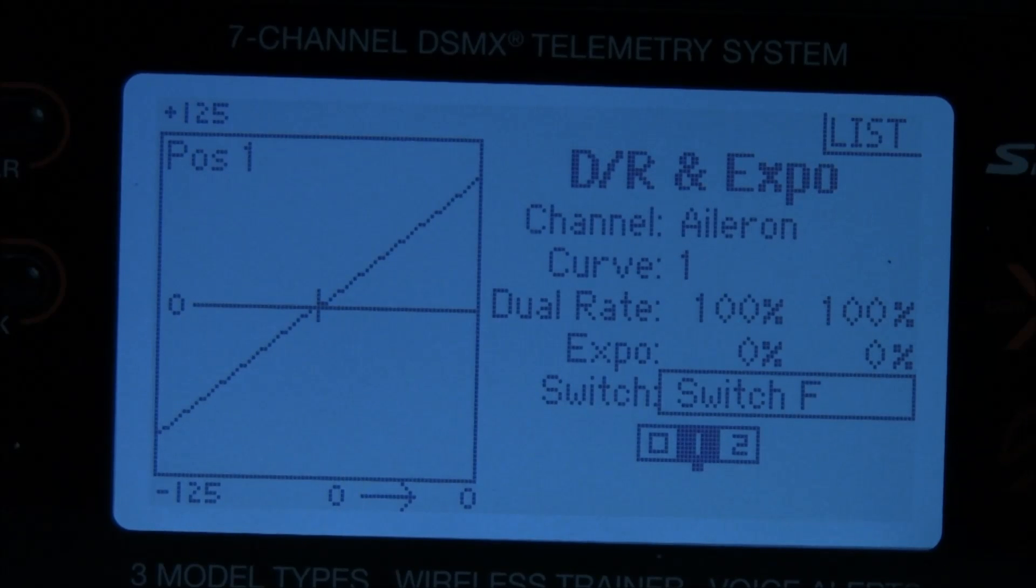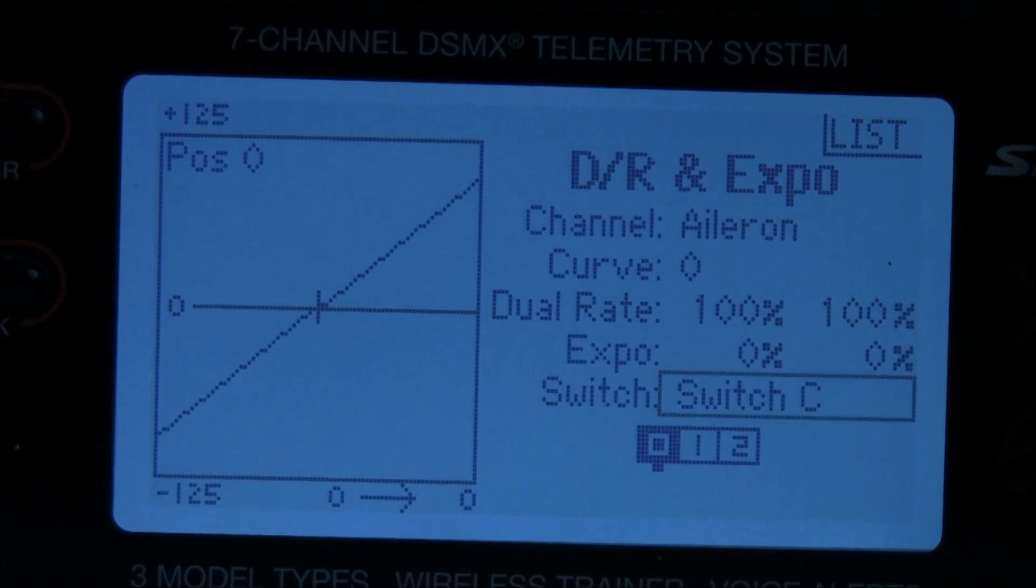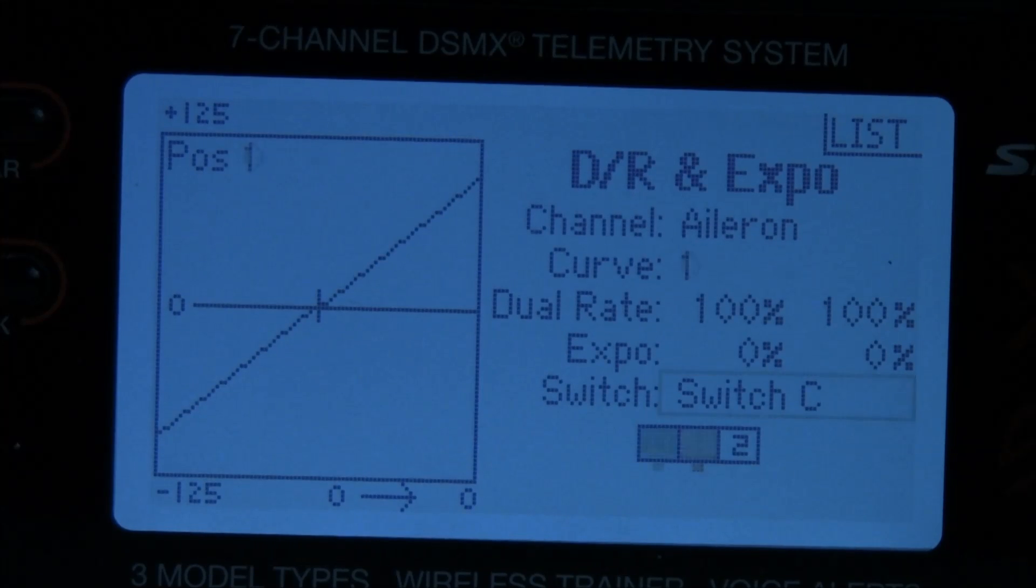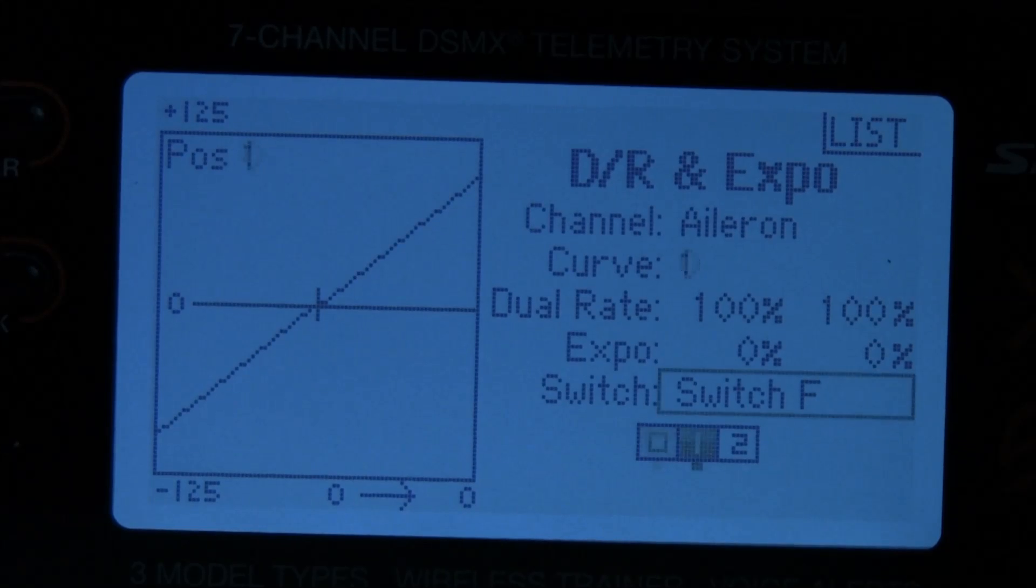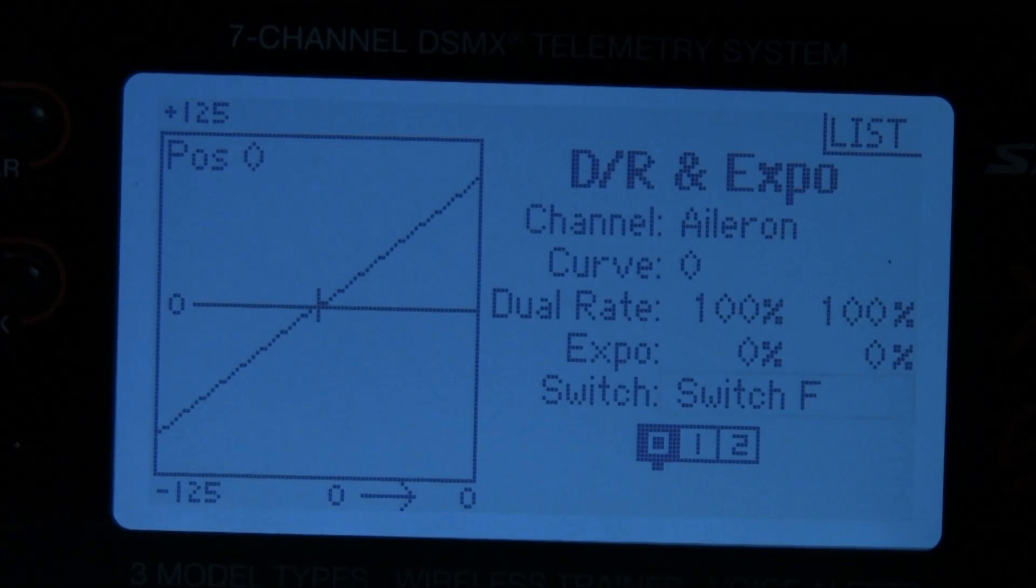But if you want to go to any other switch, let's just say switch C. Go ahead and turn on the selector switch here. It's flashing and move the switch that you want to use for your dual rate. In this case, there's switch C, but I don't really want switch C. I want switch F. There we go.